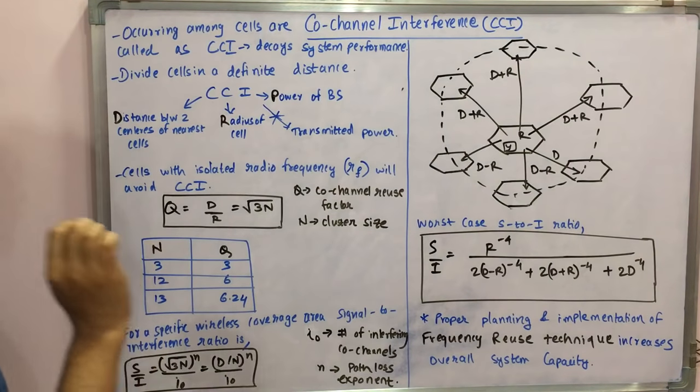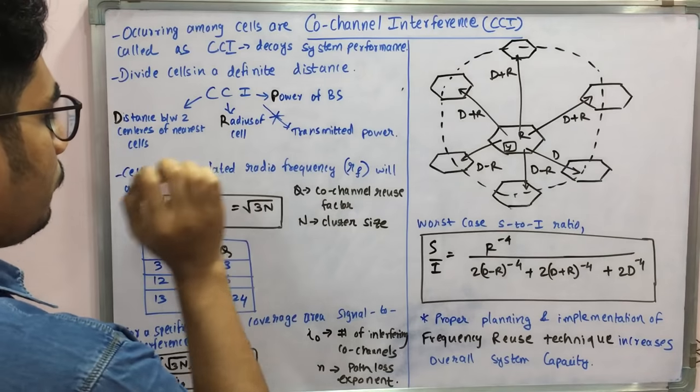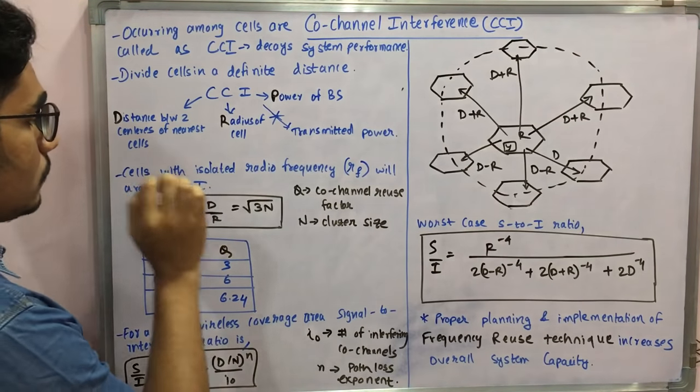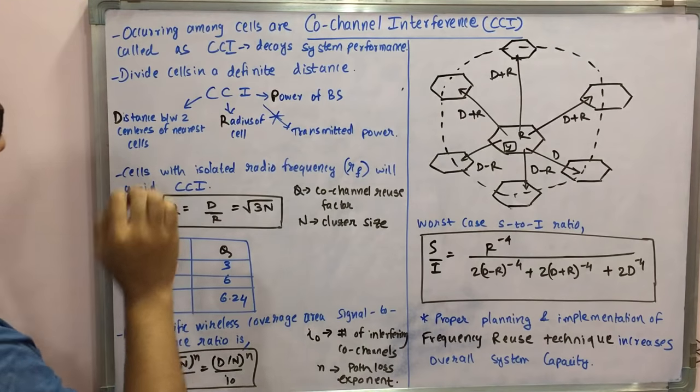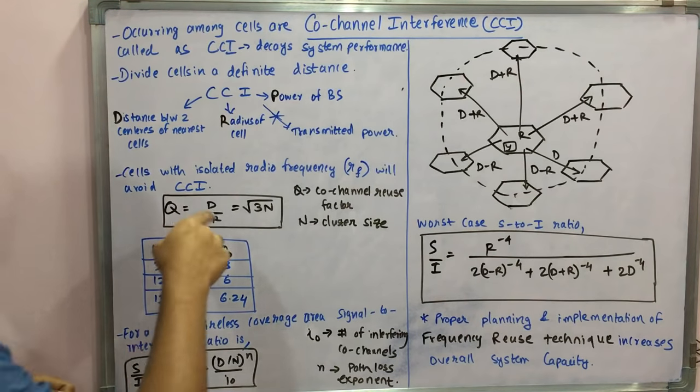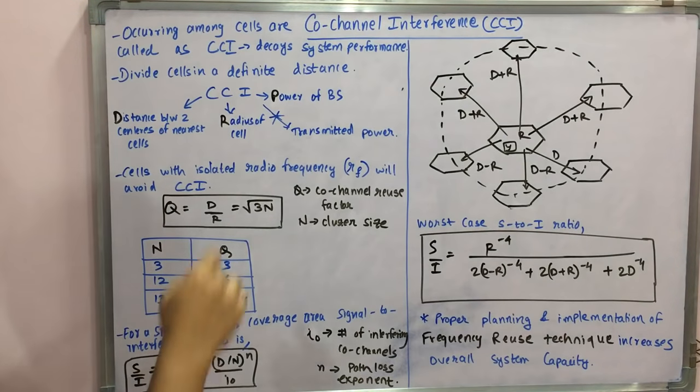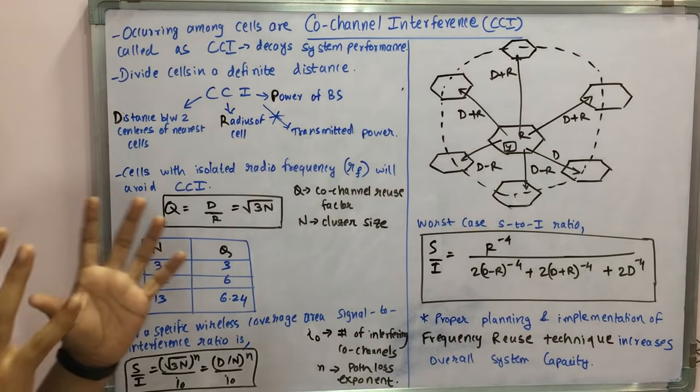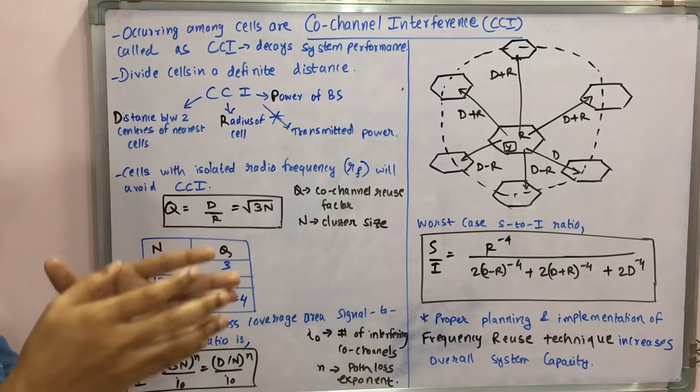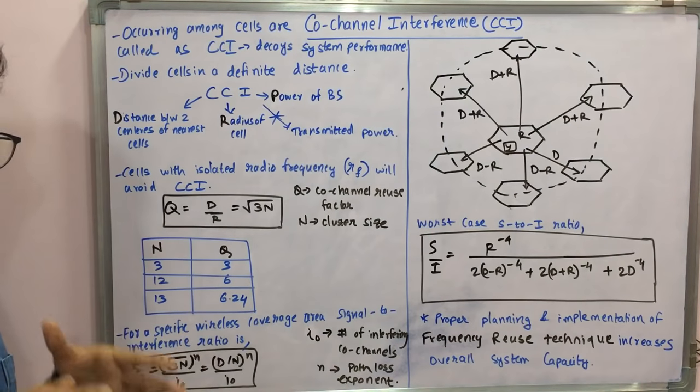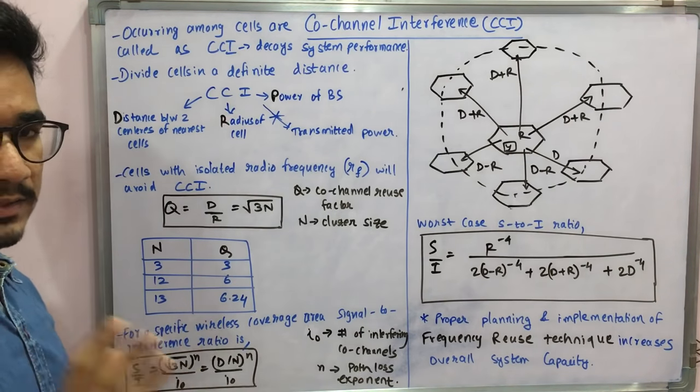To represent this we have a factor called as the co-channel reuse factor represented by q, and it's given by the equation d upon r, where it is the distance between two centers of the nearest cell and r is the radius of each of the cell, which is summarized to under root 3n. So you have some set of values for n for which you can get a considerable value for q, and so these are some standardized values. N is the cluster size of each of the cell.